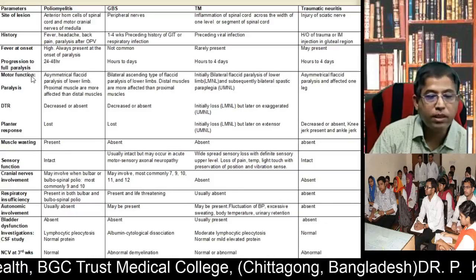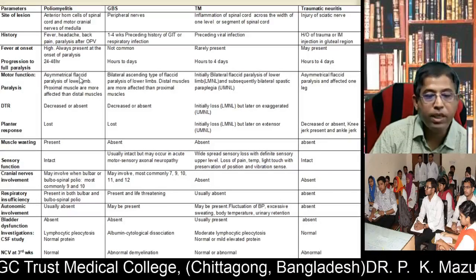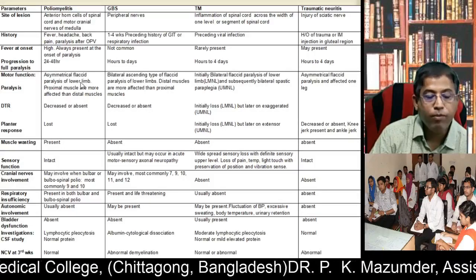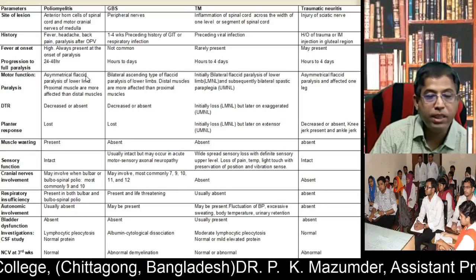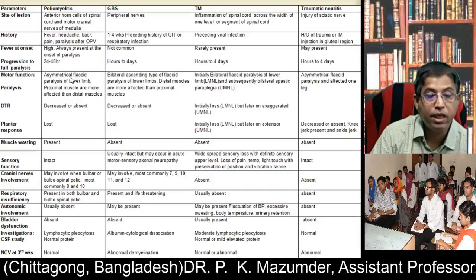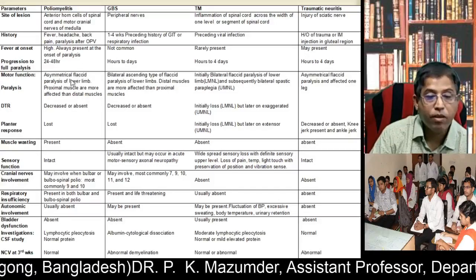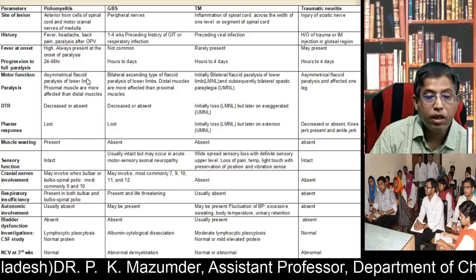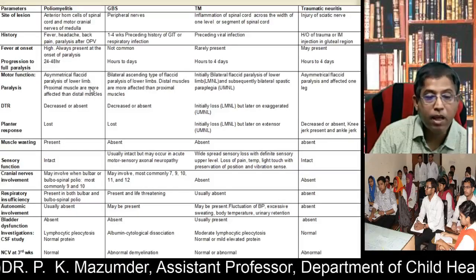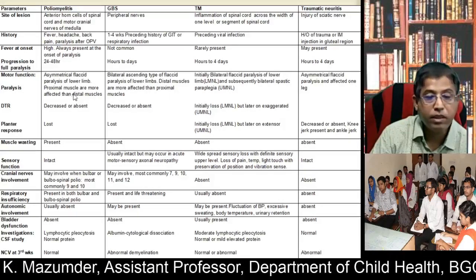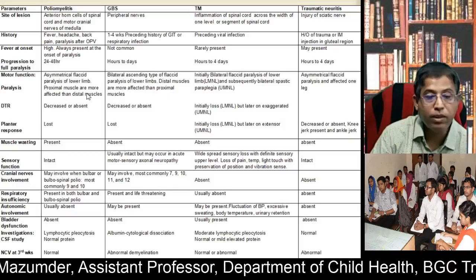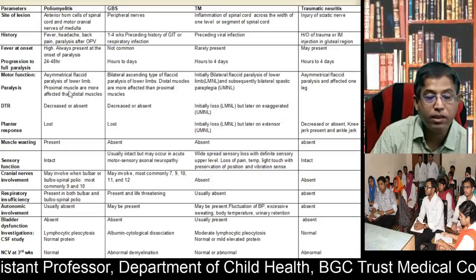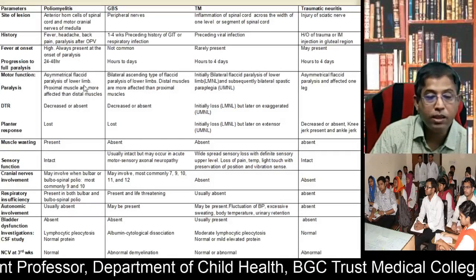Motor functions: in poliomyelitis there is asymmetrical flaccid paralysis of the lower limb — very important — and proximal muscles are more affected than distal muscles. In GBS there is bilateral ascending type of flaccid paralysis, symmetrical bilaterally, affecting the lower limb where distal muscles are more affected than proximal muscles.